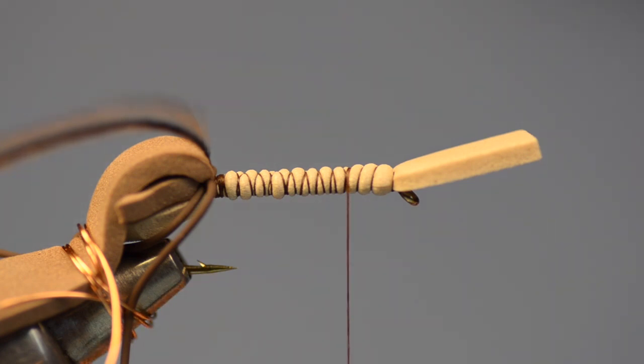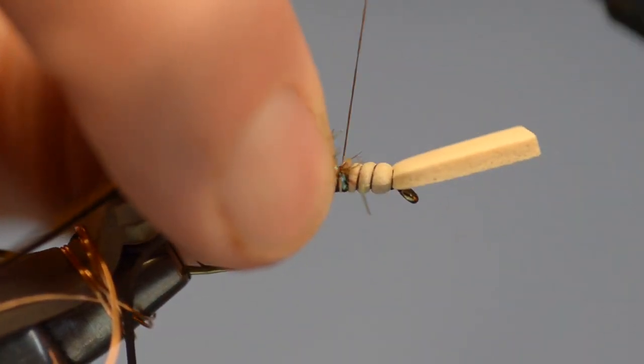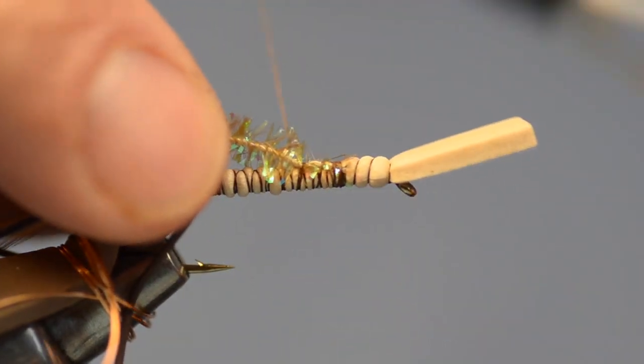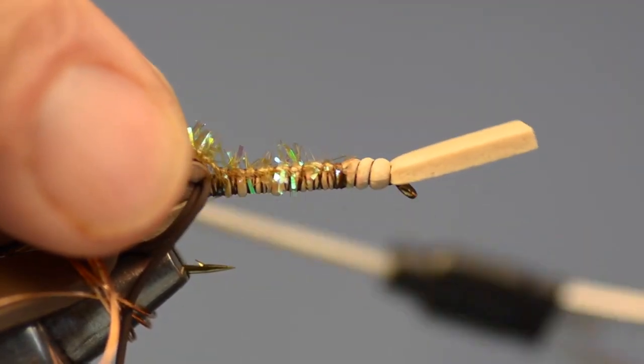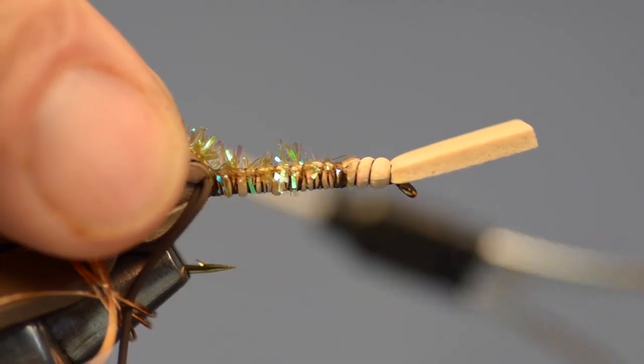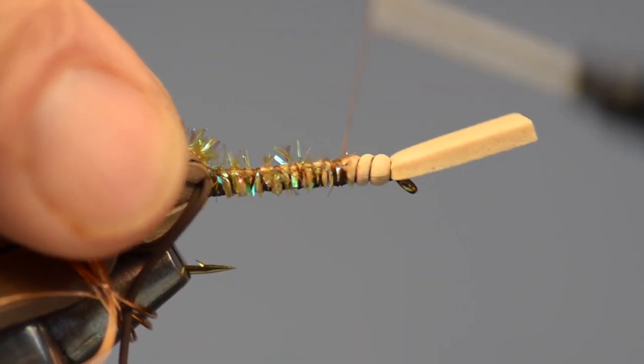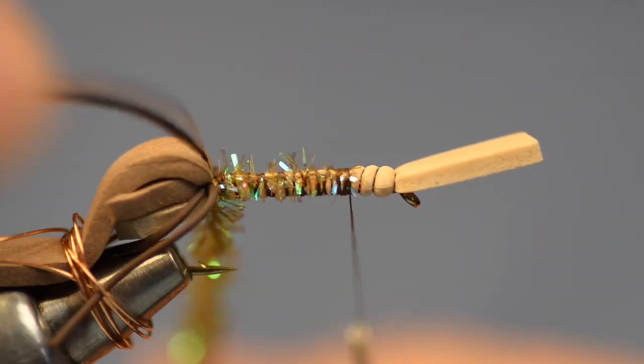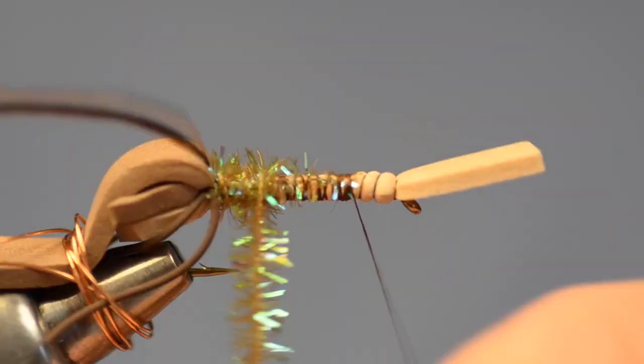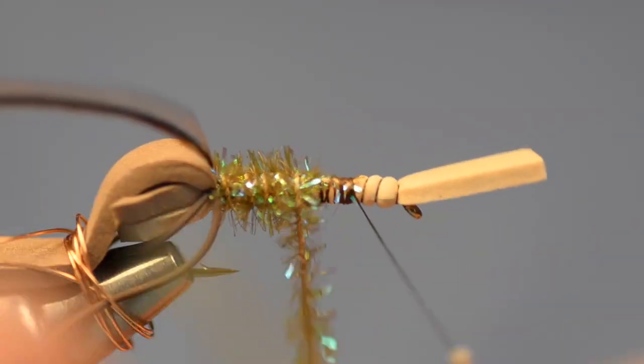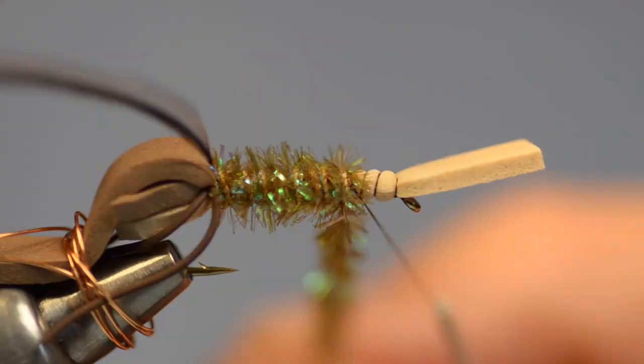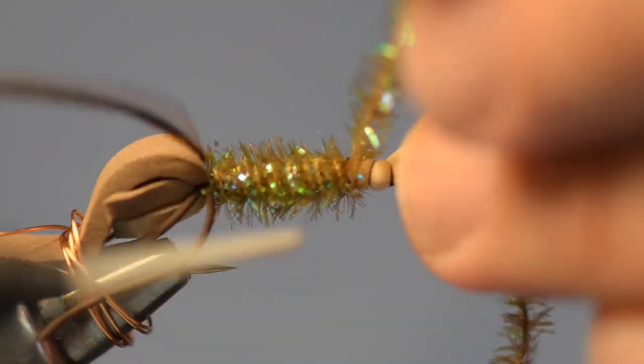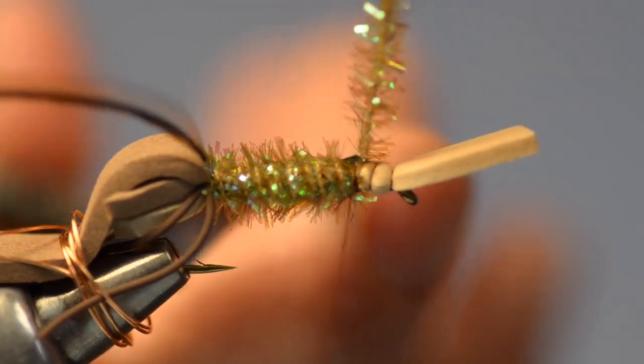We're going to use some olive crystal chenille for the body on this one. So I'm going to cut a length of that, and I'll tie this in, about 20 to 25 percent of the shank length back from the eye, and I'm going to wrap back over it all the way to the bend. Once I get there, I'll return my thread to the starting point, and I'll just wrap the chenille body. And I really try not to build this up too much. I don't want to build a lot of bulk. I'm just really kind of going for color and texture here, so I'm not really going to overlap those wraps. I'll tie that chenille off at the front and clip the excess out.